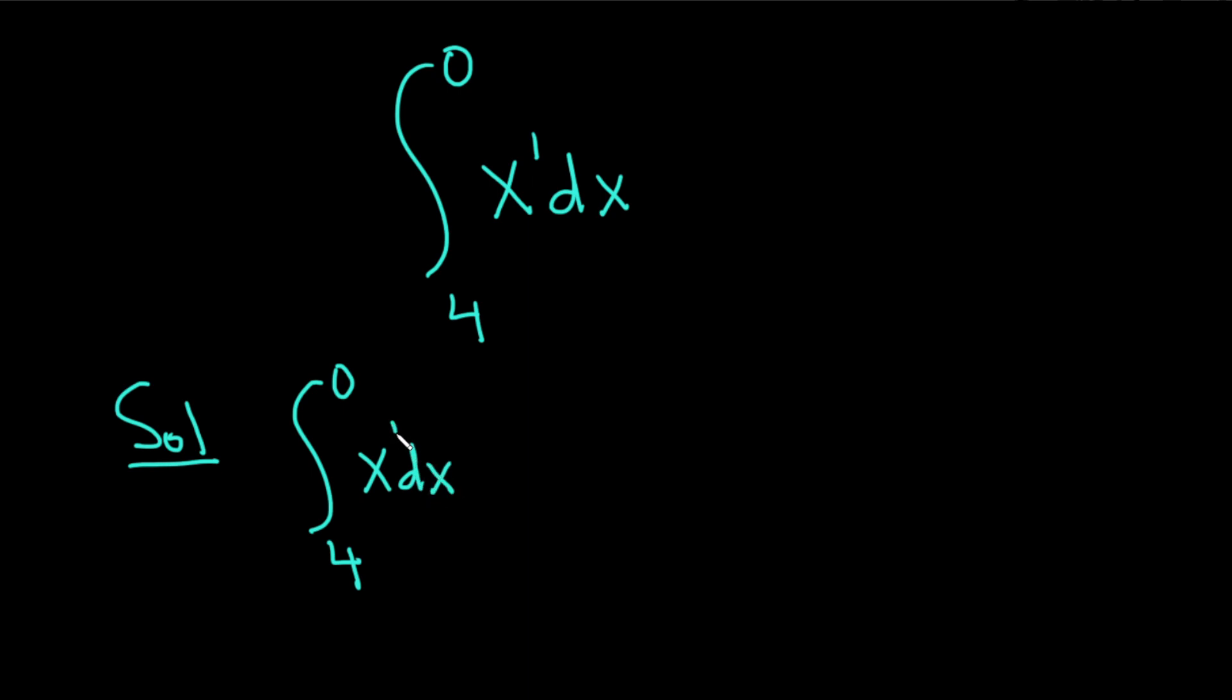Now there's an exponent here of 1, so this is equal to x squared. So you add 1 to the exponent, divide, and then we're going from 4 to 0.